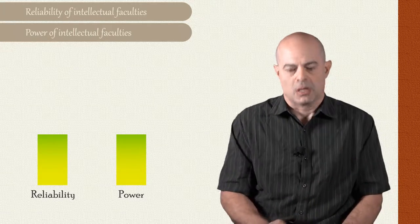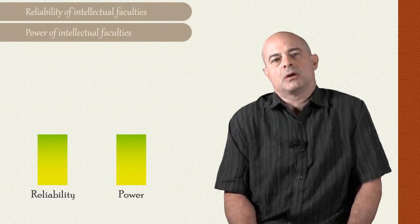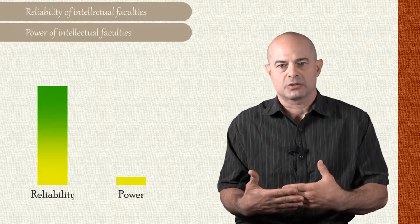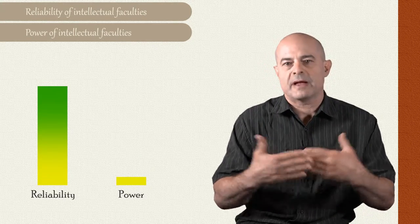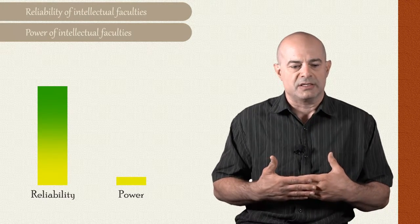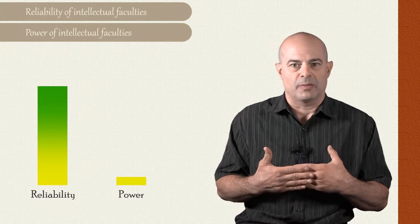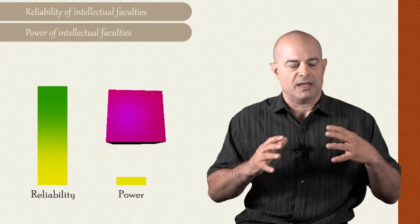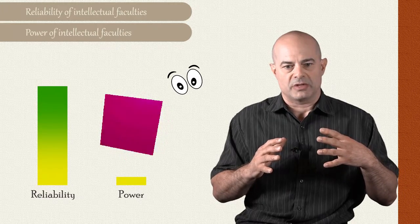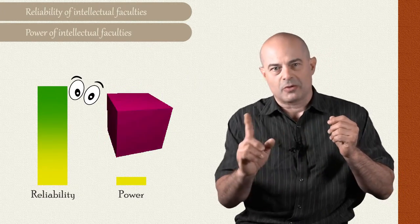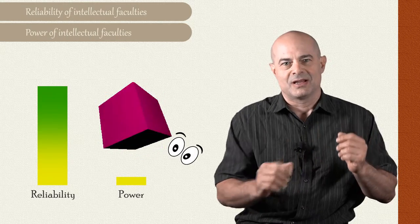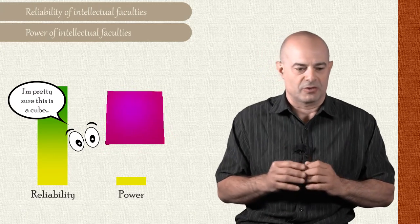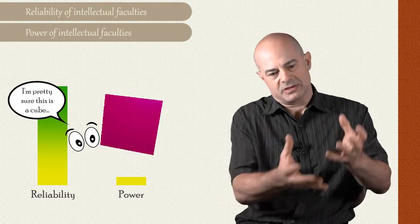So for example, you might have a perceptual faculty that's highly reliable, but with very poor power. So you might be the person, you could imagine a person, for example, who is extremely careful about any judgments they make about an object's shape. So they refuse to make a judgment about the object's shape until they get to go all the way around the object and look very carefully. And then they'll say, oh, that's a cube. Or they might do the same thing and decide, oh, this is a sphere.